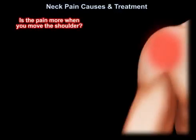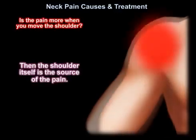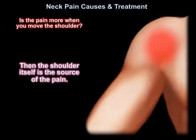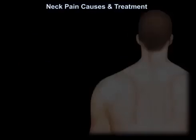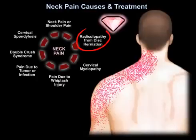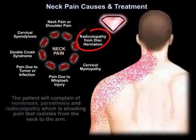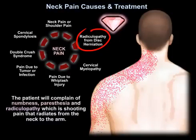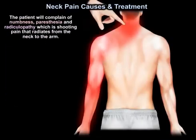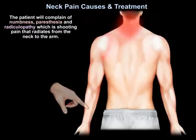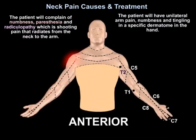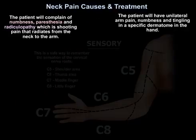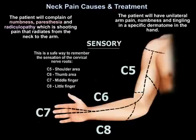Is the pain more when you move the shoulder? Then the shoulder itself may be the source of the pain. An important cause of neck pain is disc herniation. The patient will complain of numbness, paresthesia, and radiculopathy, which is shooting pain that radiates from the neck to the arm. The patient will have unilateral arm pain, numbness, and tingling in a specific dermatome in the hand, as shown in this diagram.